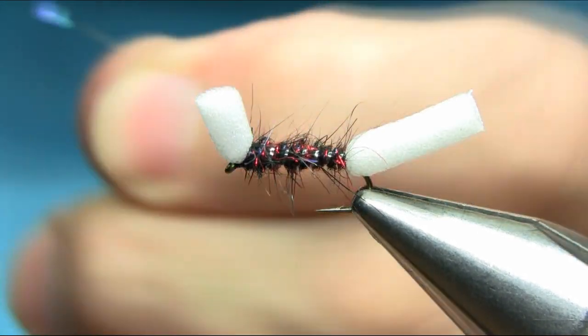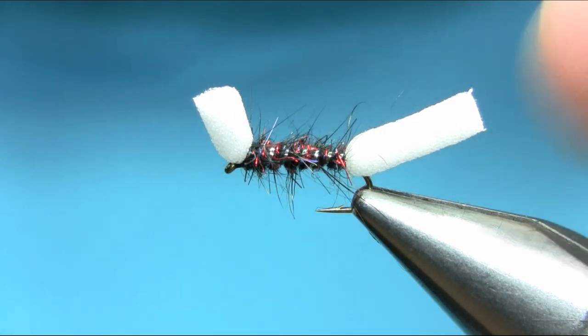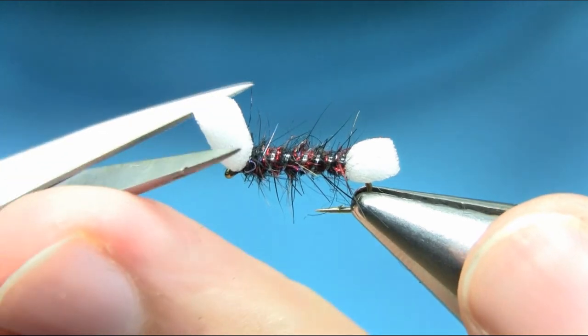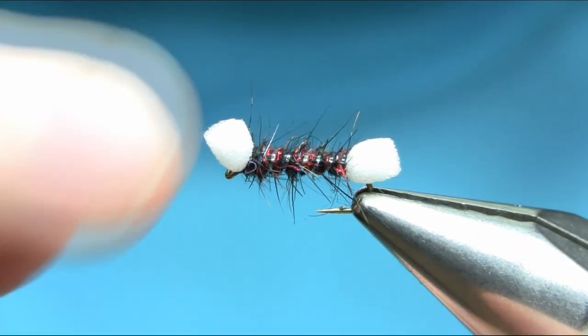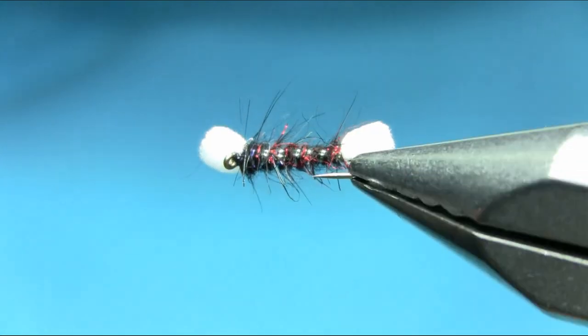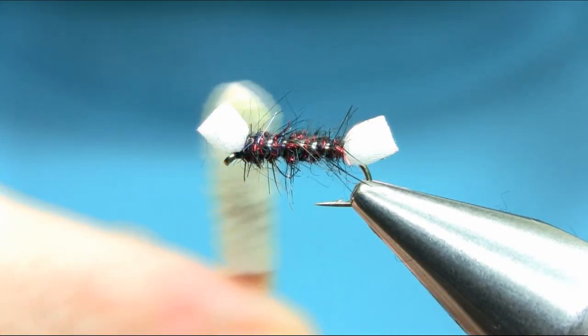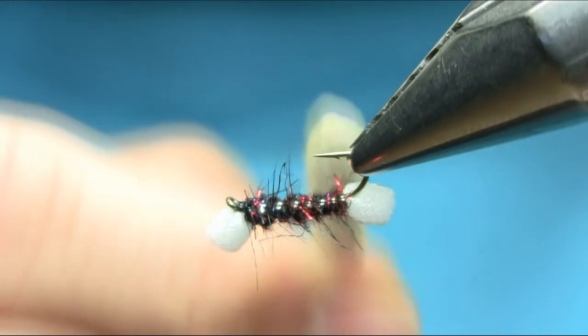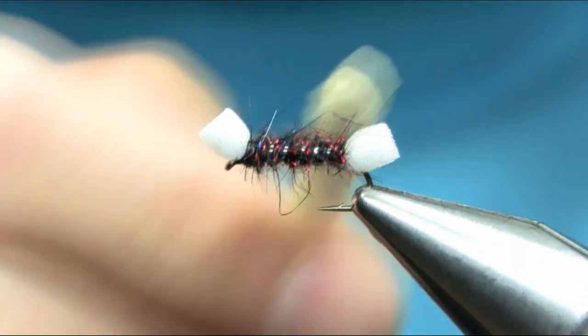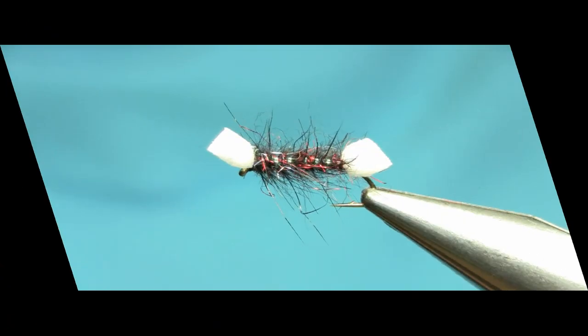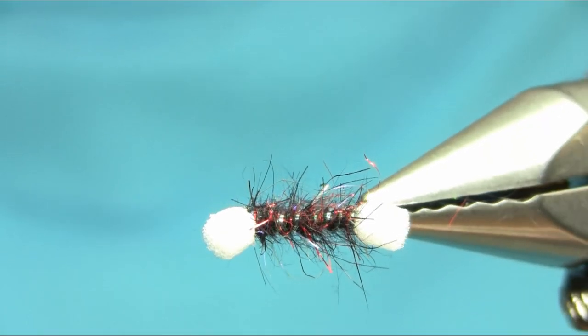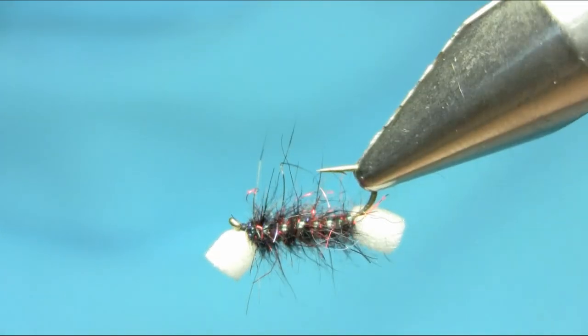I always love this pattern. Cut either side and then use your dubbing brush to release some fiber to make it a bit scruffy. So there we have a Shipman buzzer. I hope you enjoyed this video. Thanks for watching.